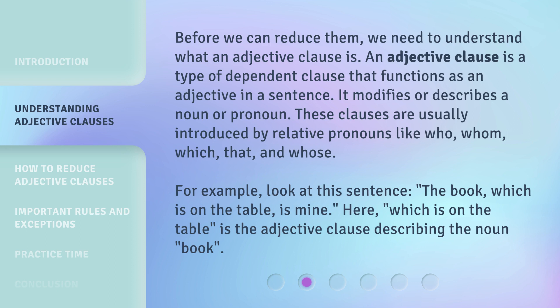For example, look at this sentence: 'The book, which is on the table, is mine.' Here, 'which is on the table' is the adjective clause describing the noun 'book.'